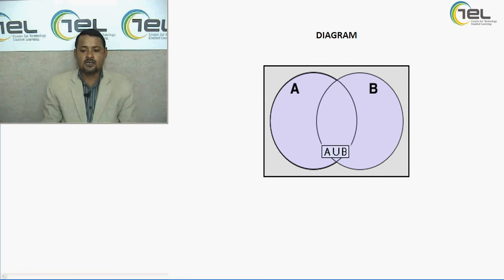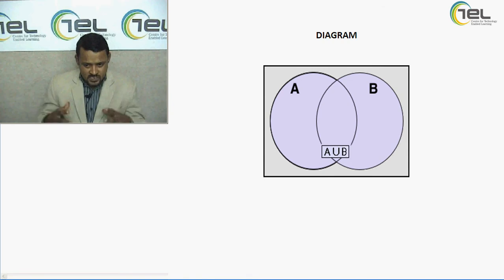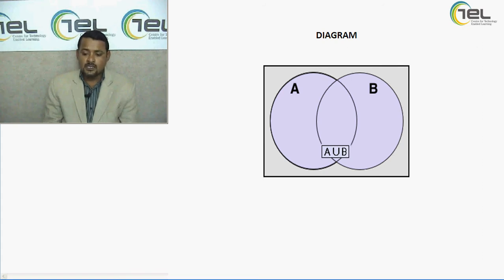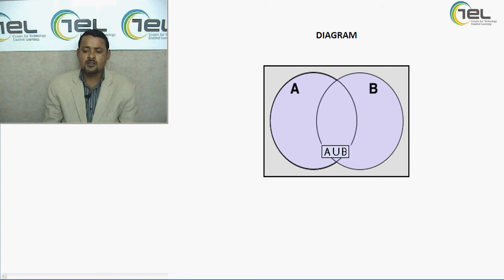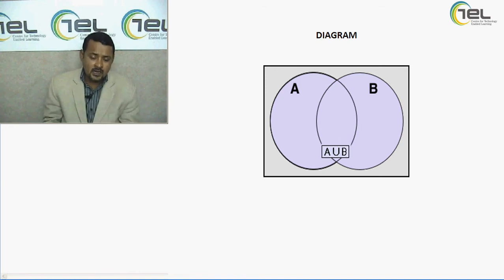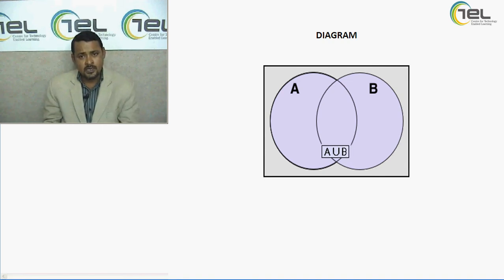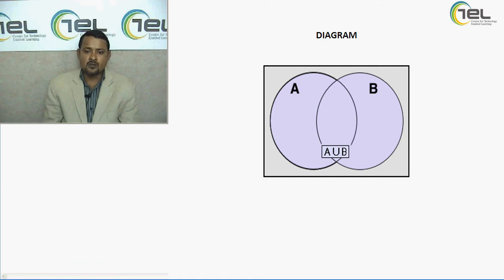A union B represents set A added to set B. There are some common elements which appear in the middle portion of the Venn diagram — elements present in both set A and set B. Since an element appears once in A and once in B, we must not take it twice when calculating A union B. We take it only once. That is why this is the common diagram that represents A union B.